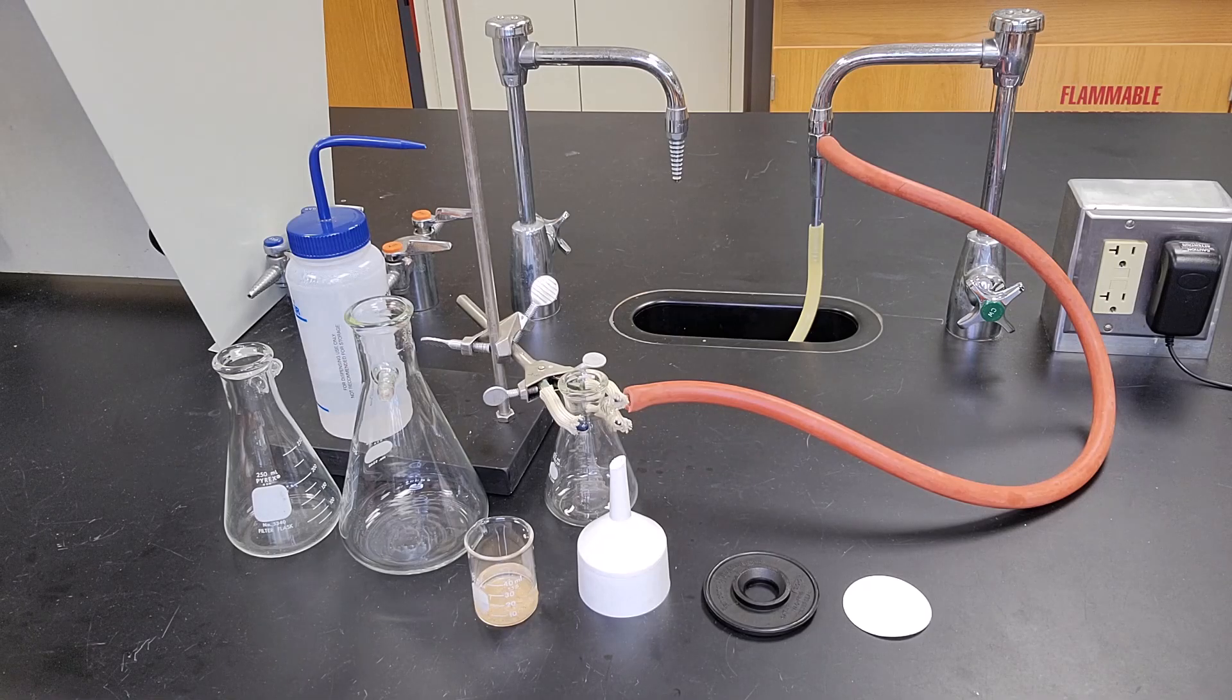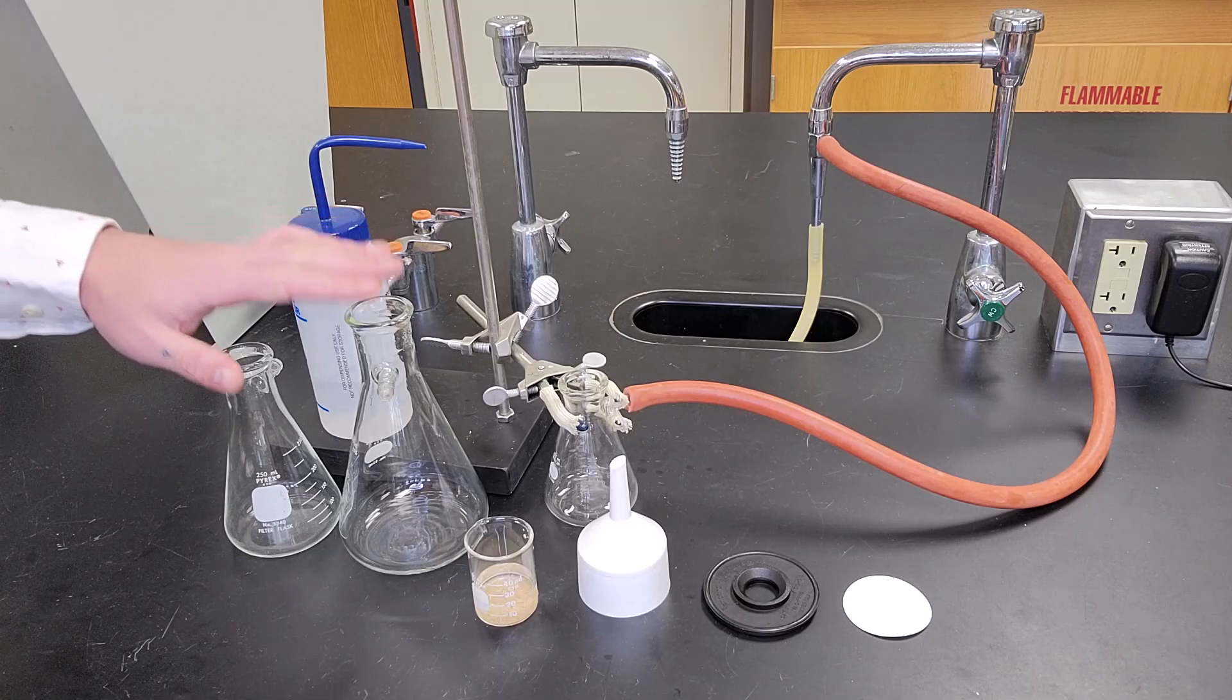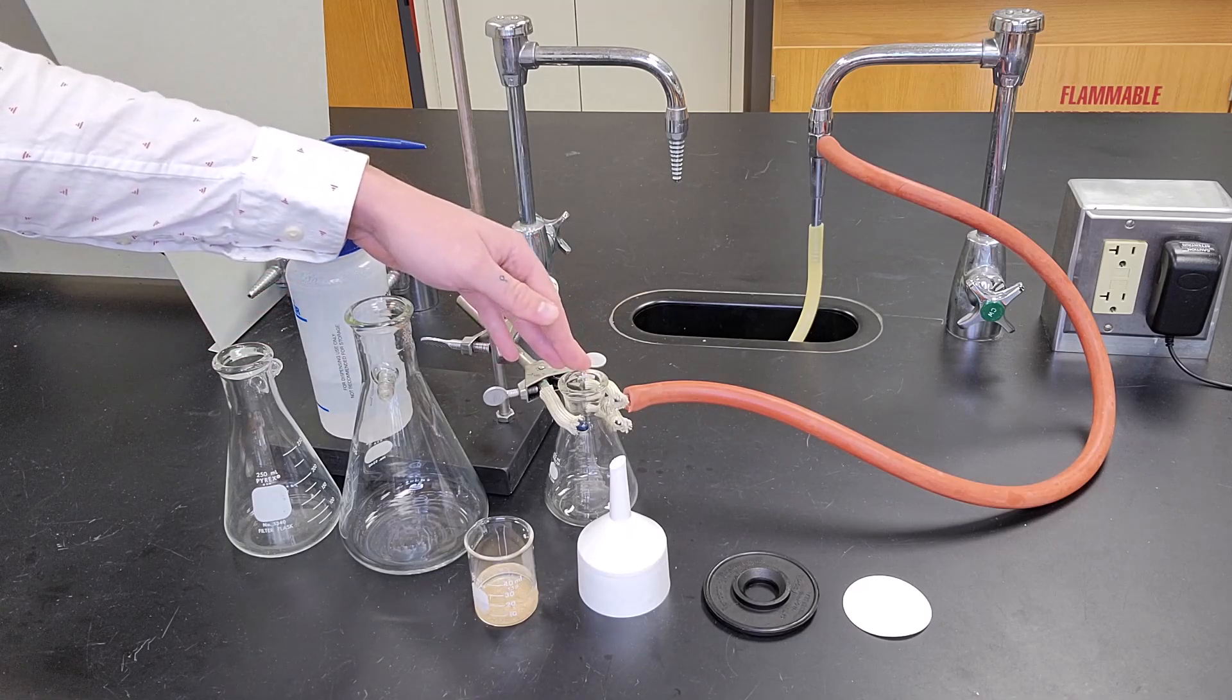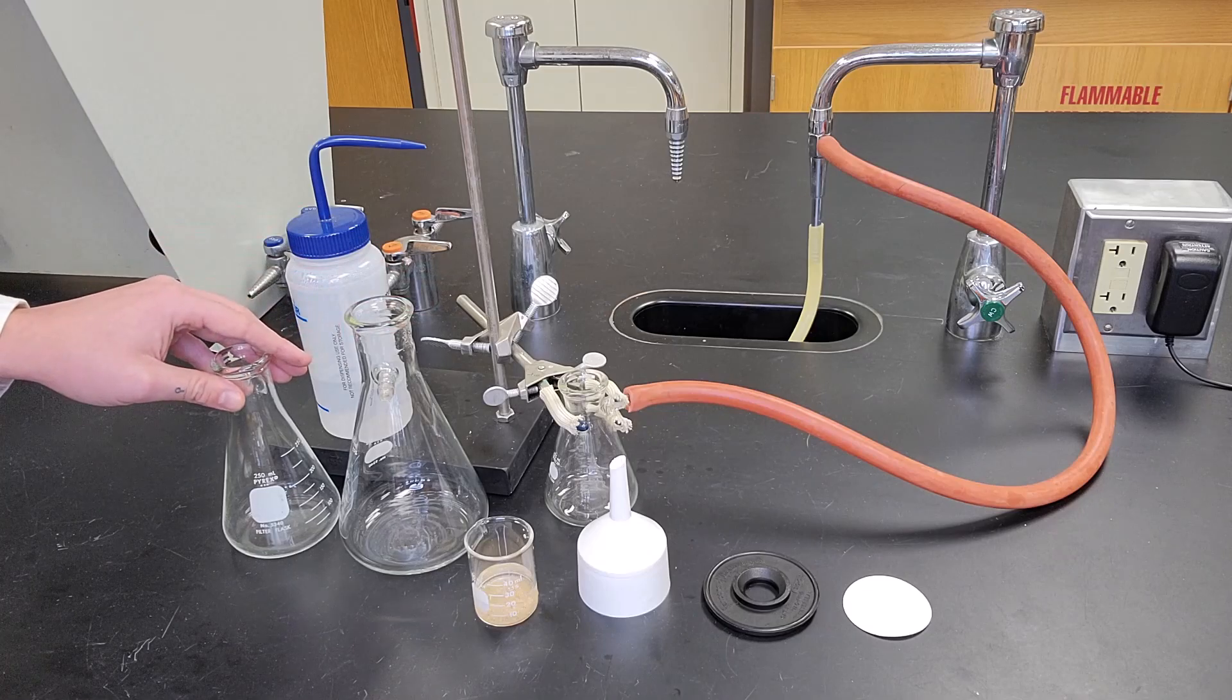There are a couple pieces to a vacuum filtration. One is the sidearm flask or sidearm Erlenmeyer flask. I have the smallest one hooked up, but they come in different sizes—we have a larger and a medium size.